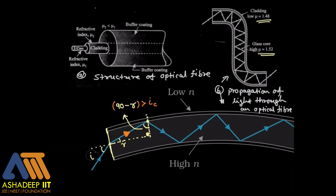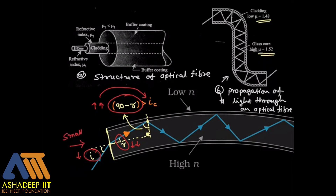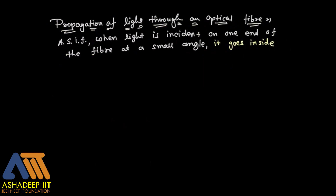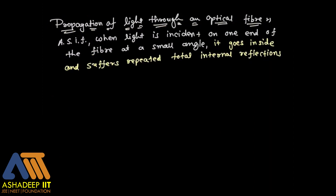When light is incident on one end of the fiber at a small angle, that small angle is necessary. Because if i is small, then r will be smaller, and if r is smaller, 90 minus r will be larger — making it easier to keep that value greater than the critical angle ic. That's why the angle of incidence should be as small as possible, ideally zero degrees — incident normally. From there, as soon as light enters, total internal reflections start happening.